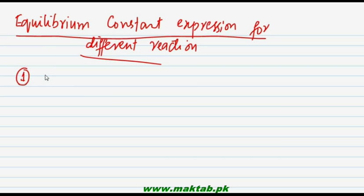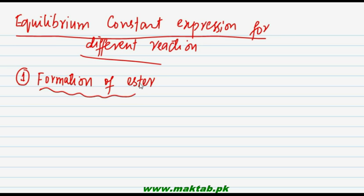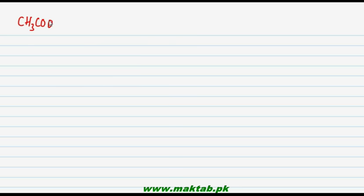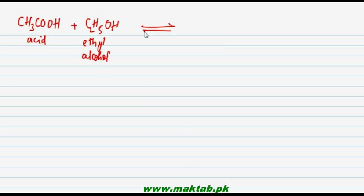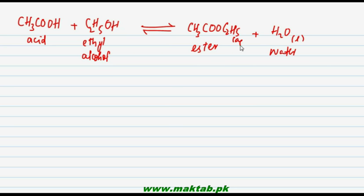The first reaction we'll study is the one we covered previously: formation of ester. If I write this reaction, the reactants are CH3COOH (acetic acid) reacting with C2H5OH (ethyl alcohol). These react together to form ester (CH3COOC2H5) plus one molecule of water is released.